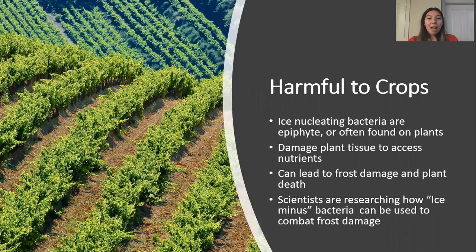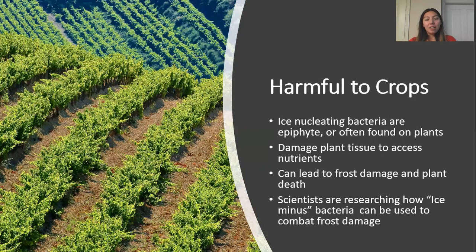Ice nucleating bacteria are a huge concern for commercial farmers because they can be very harmful to crops. Ice nucleating bacteria are epiphytic, meaning they are often found on plants. They damage the plant tissue in order to access the nutrients inside the plants. Since they cause the formation of ice, they can lead to frost damage and even kill plants. Scientists are researching how ice minus bacteria, or bacteria that do not cause the formation of ice, can be used to combat frost damage.